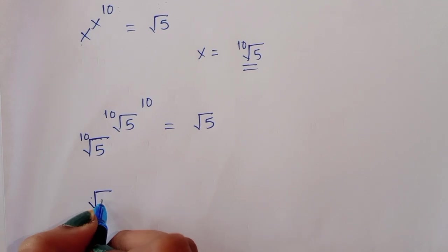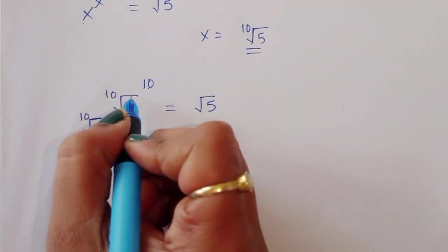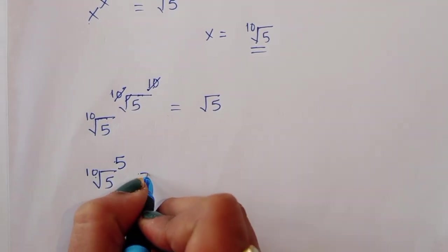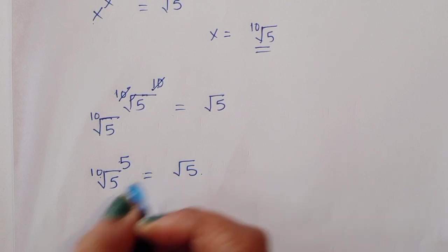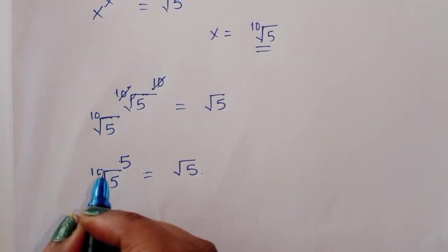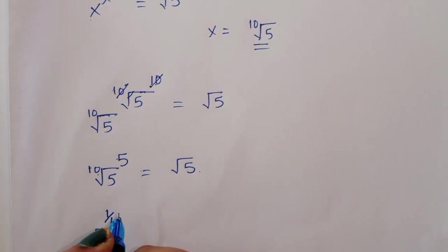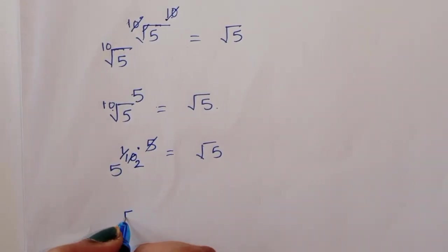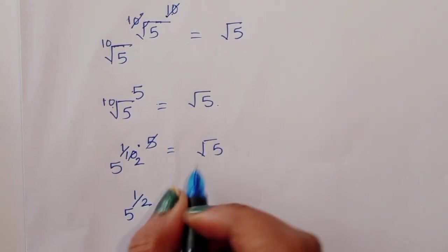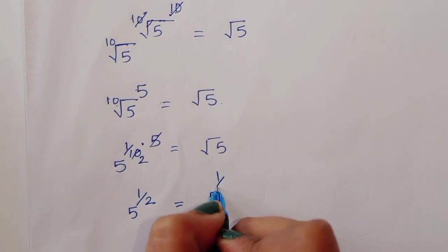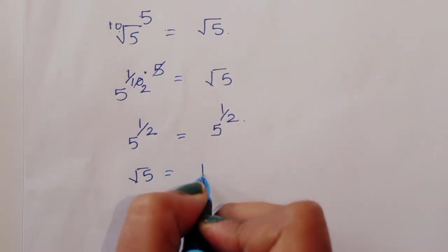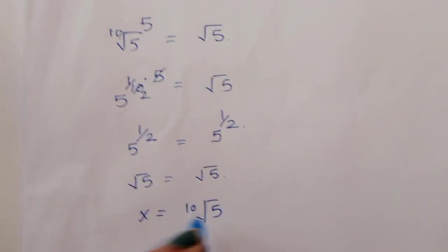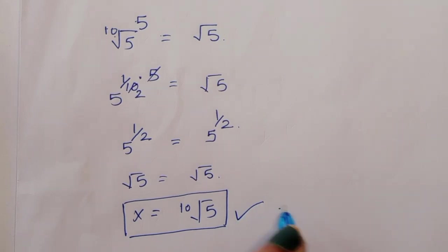We get square root of 5 raised to the power 10, and the power 10 cancels, giving us 5 raised to 1/2 times 10, which equals 5 raised to the power 5, simplifying to square root of 5. Therefore, square root of 5 is equal to square root of 5, that is 5 raised to 1/2. So we can confirm x is equal to the 10th root of 5 is the correct solution. Thank you.